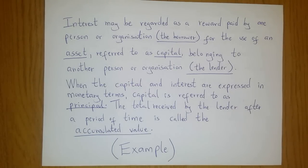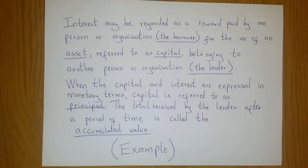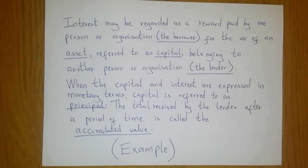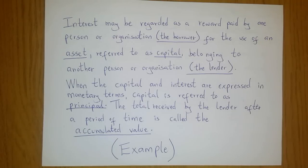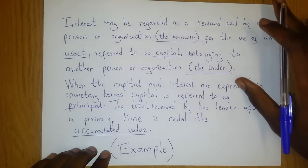When the capital and interest are expressed in monetary terms, the capital is referred to as principal. So in our example, we borrow cash from the bank — that is the principal. The total received by the lender after a period of time is called the accumulated value. This total includes the principal and the interest, so you get the accumulated value by adding the principal to the amount of interest earned over the period of the investment.